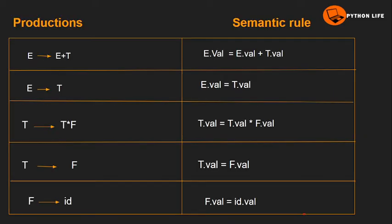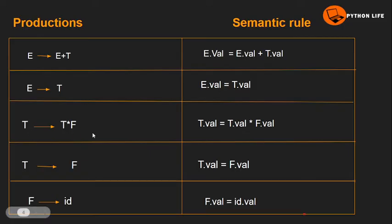Now let's look at an example. On the left side we have productions, which form the grammar. The productions are: E tends to E plus T, E tends to T, T tends to T star F, T tends to F, and F tends to id. Next we have the semantic rules. The attribute value can be a string, memory location, or complex record.